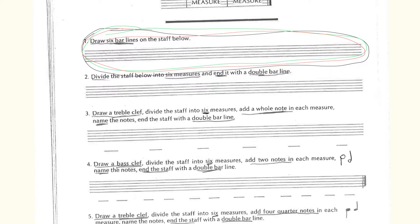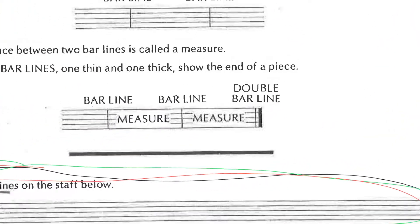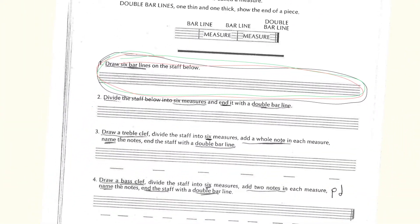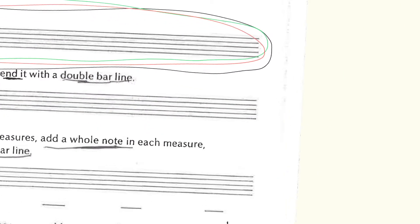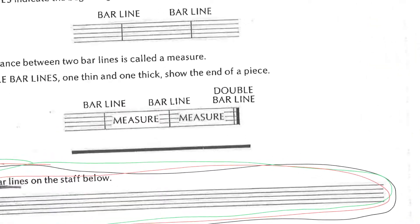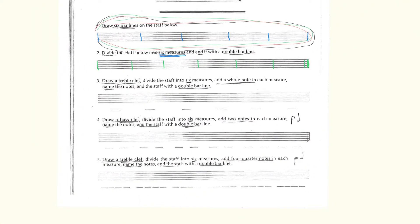The next exercise says divide the staff below into six measures and end it with a double bar line. Remember, the double bar line has a thick and a thin line. For number two, you draw six measures and the double bar line must go at the very end, just like shown above.